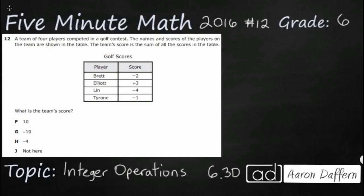We have 4 players that are competing in golf. We have their names and their scores and the team's sum is the team's score. What we need to do is find the team's score. This little clue right here lets us know that we are going to need to find the sum of Brett and Elliott and Lin and Tyrone. In golf, the lower the number the better.